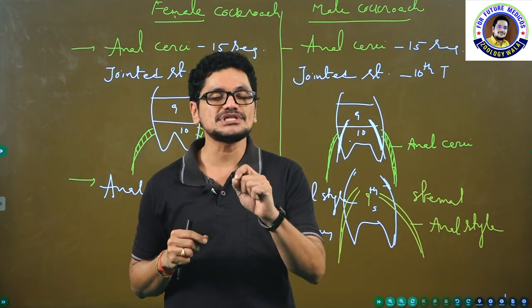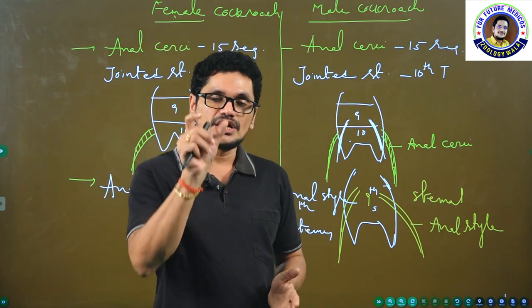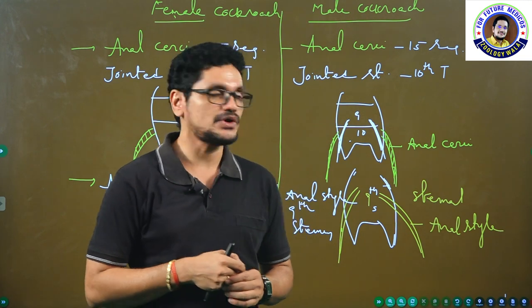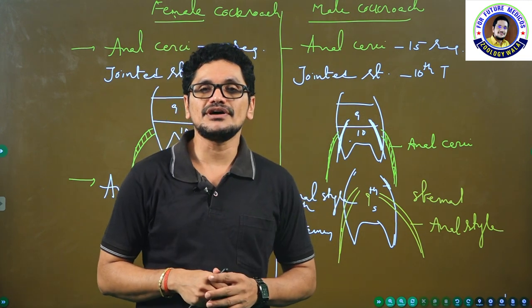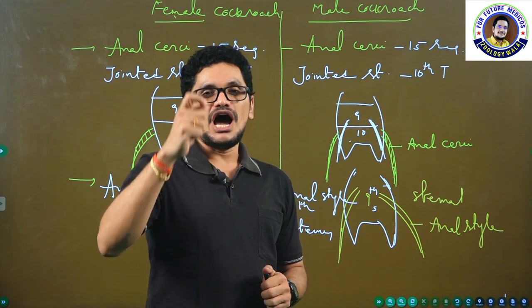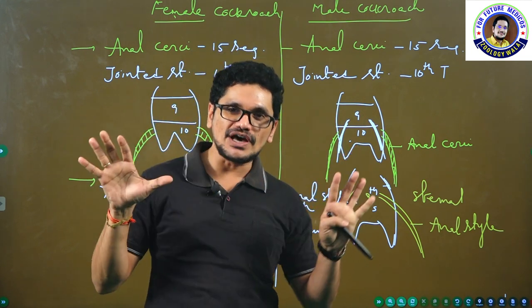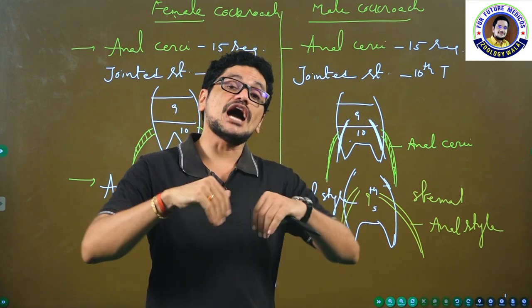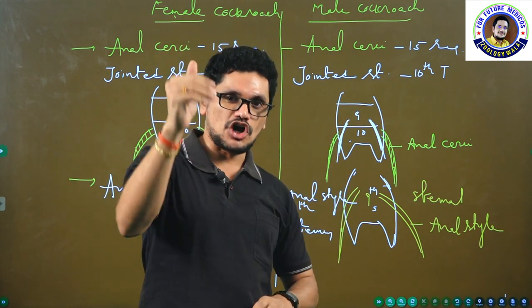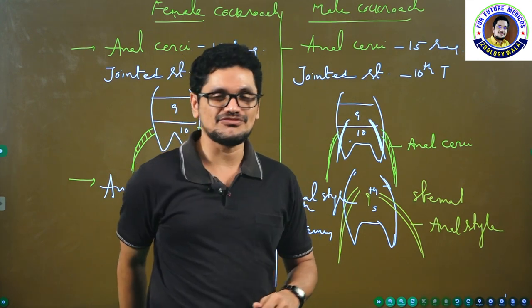And here I have to mention gonapophysis, also called phallomeres — I will explain at the time of the reproductive system. That is all about the abdomen of cockroach, my dear friends. In the next video, I am going to come in front of you with the anatomical aspects of the cockroach, beginning with the digestive system. Morphology is over. See you soon, my dear friends. Thank you. Signing off.